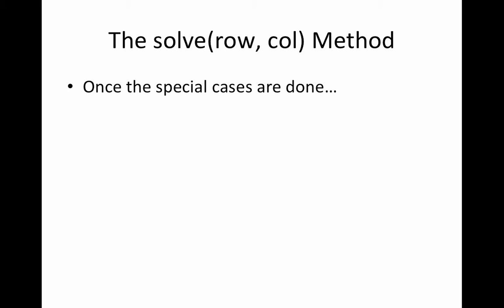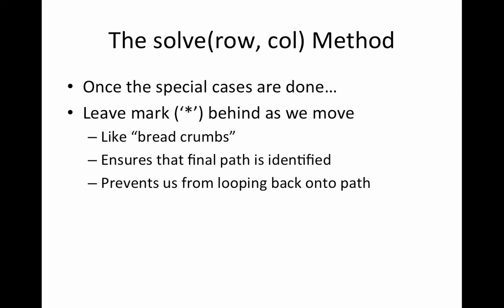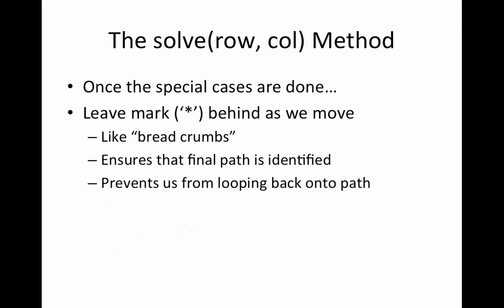Now once those special cases are done, we will put an asterisk, a mark, to this particular row and column location, so that we ensure that the final path is identified. This practice will also prevent us from looping back onto the same path. Now if we reach a dead end, if the current location does not lead to the end of the maze, then we will have to remove the mark and reset it to space and then return false.